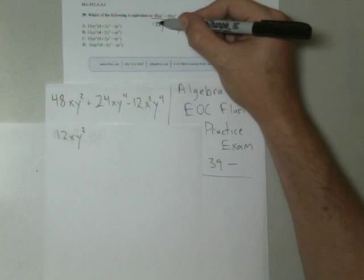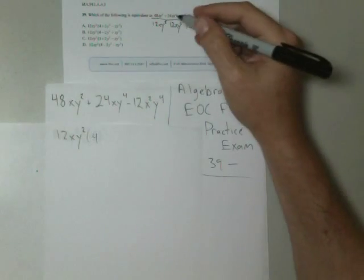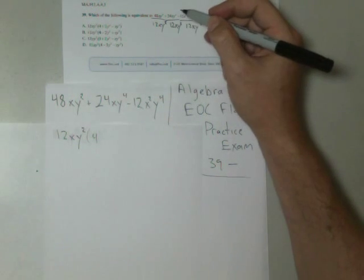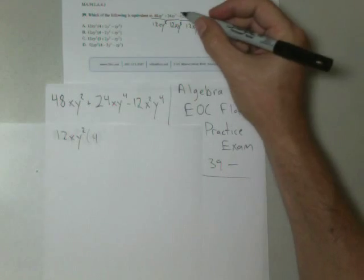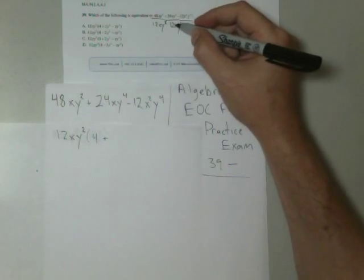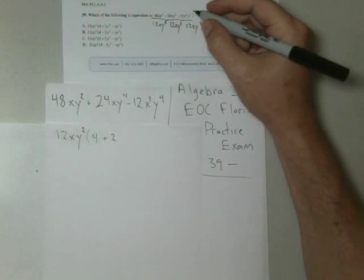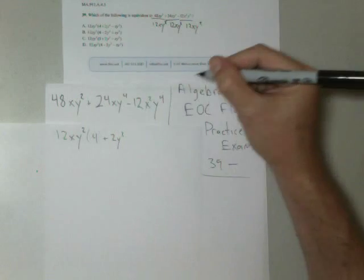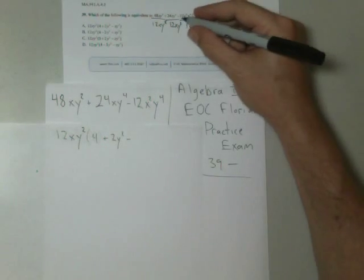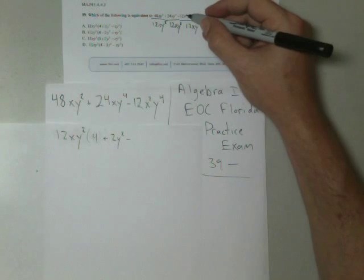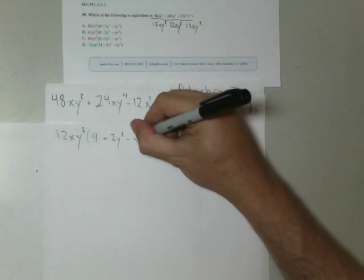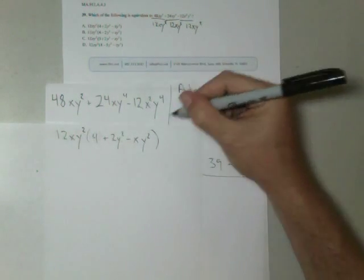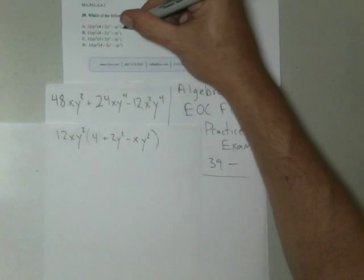48 divided by 12 is 4. x cancels with x. y² cancels with y². Because I factored out a positive, I keep my sign plus. 24 divided by 12 is 2. x cancels with x. y⁴ divided by y² is y². Keep my sign minus. 12 cancels with 12. x² divided by x is x. y⁴ divided by y² is y². And that is choice A.